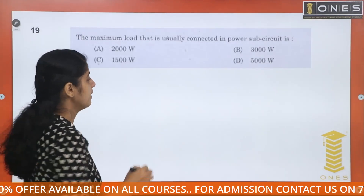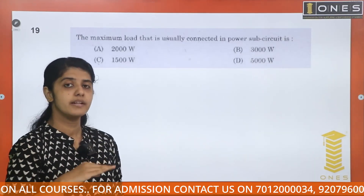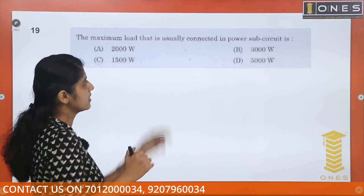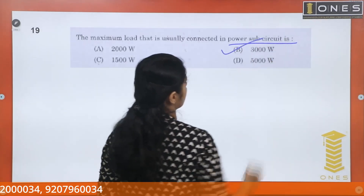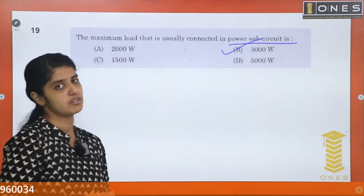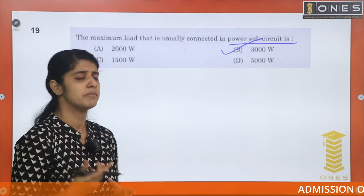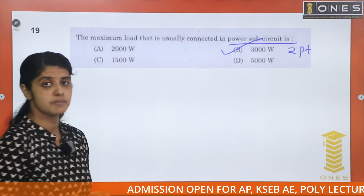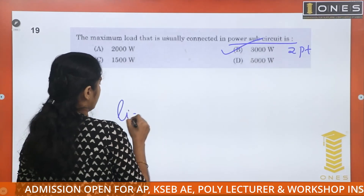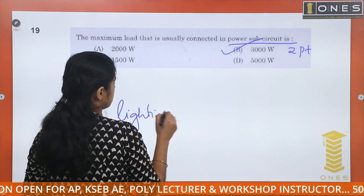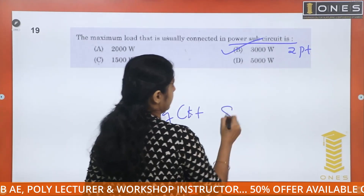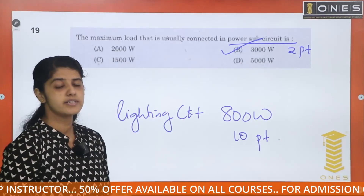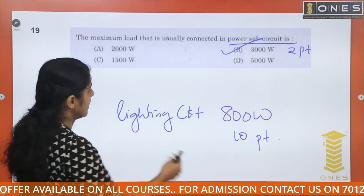In a power sub-circuit, the maximum load is 3000 watts with a maximum of 2 points. For a lighting circuit, the maximum is 800 watts with 10 points.